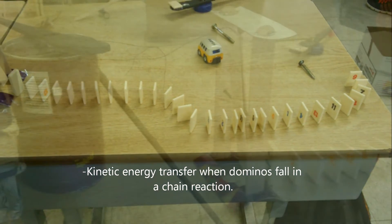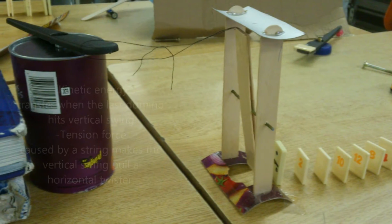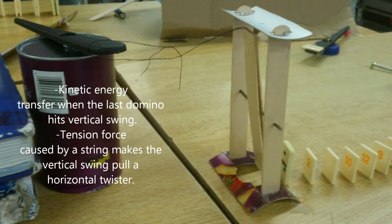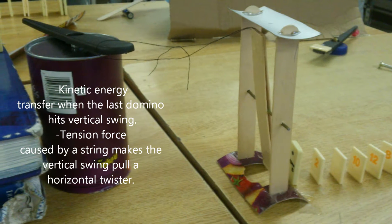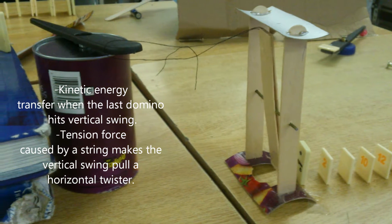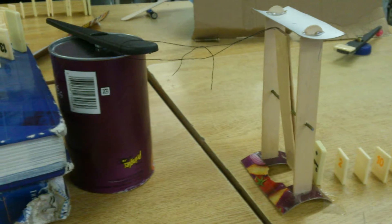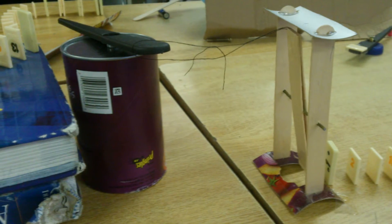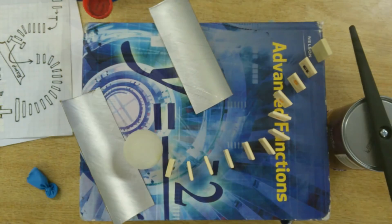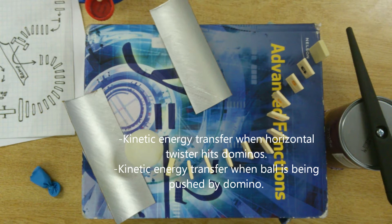The last domino will hit a vertical swing and transfer the kinetic energy. The vertical swing is connected to a horizontal twister with a string. When the vertical swing is hit by the dominoes, the string's tension will pull the horizontal twister because of the transfer of kinetic energy.